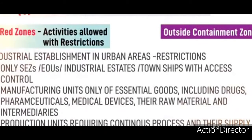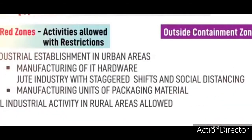In red zones, industrial establishments permitted in urban areas include only Special Economic Zones, Export Oriented Units, industrial estates, and townships with access control. Manufacturing units of essential goods including drugs, pharmaceuticals, medical devices, their raw materials and intermediaries, and production units requiring continuous processes and their supply chains are also permitted.